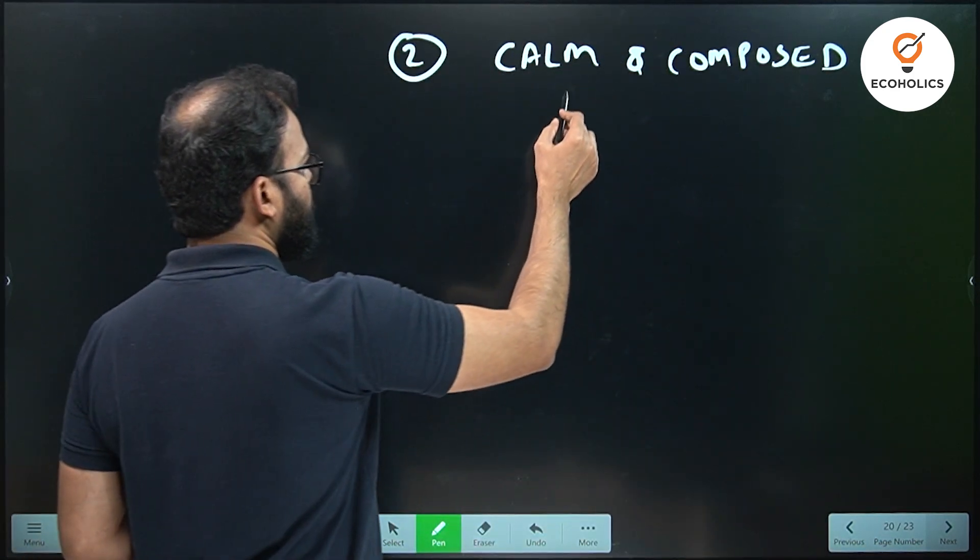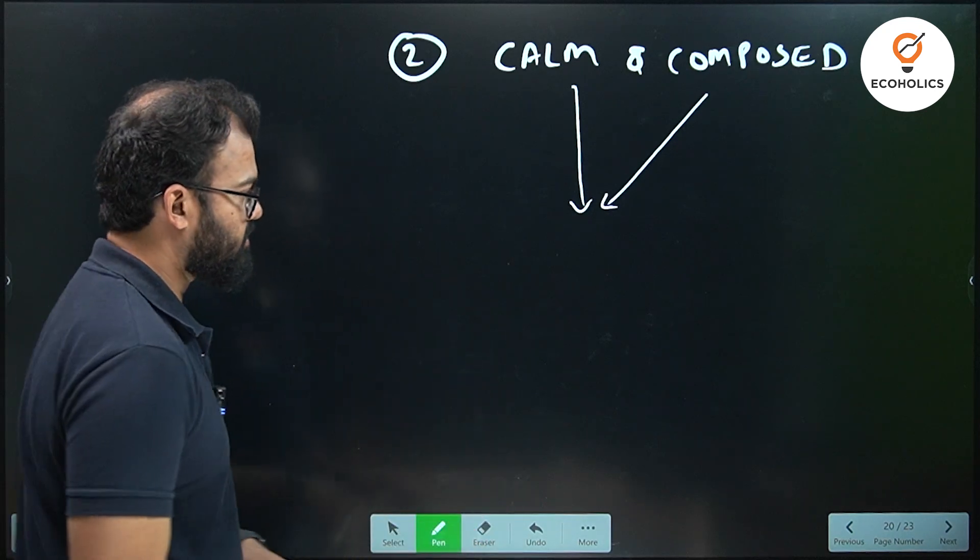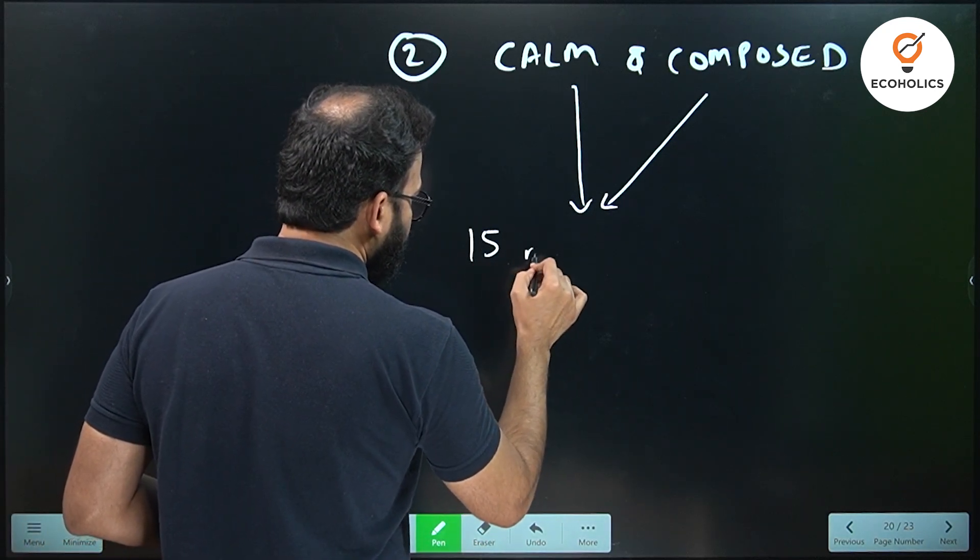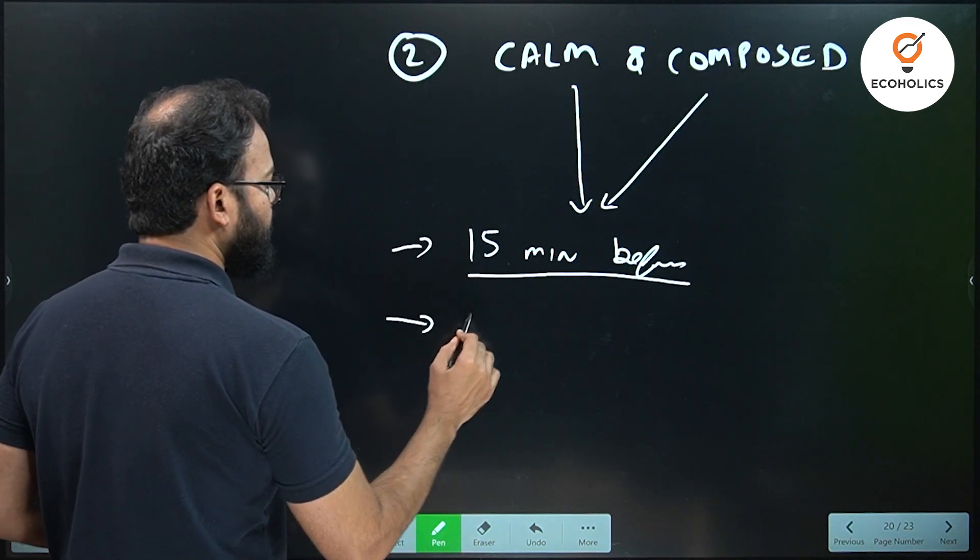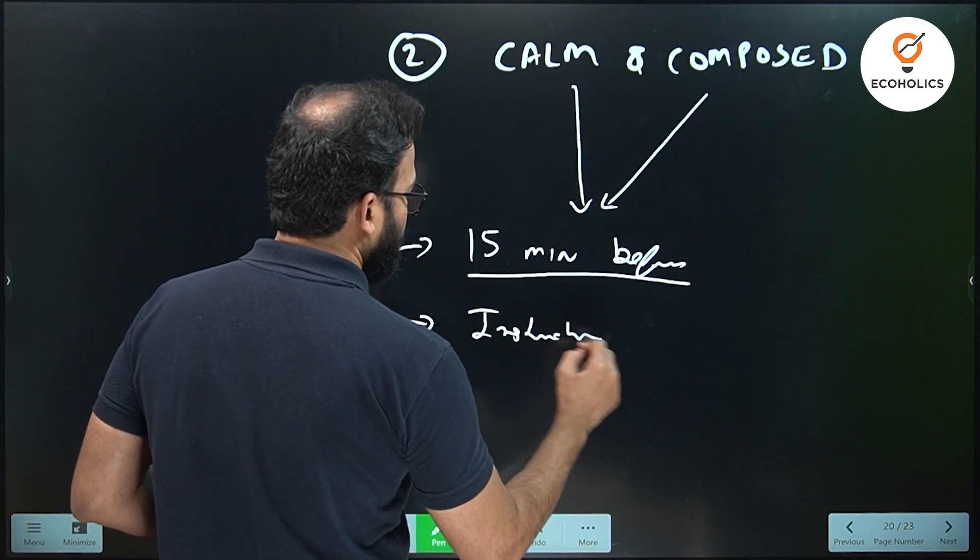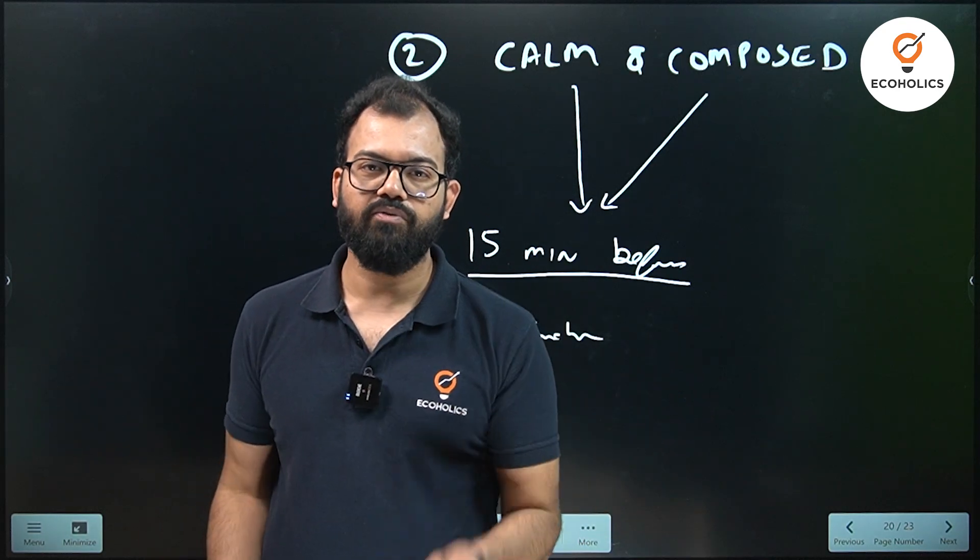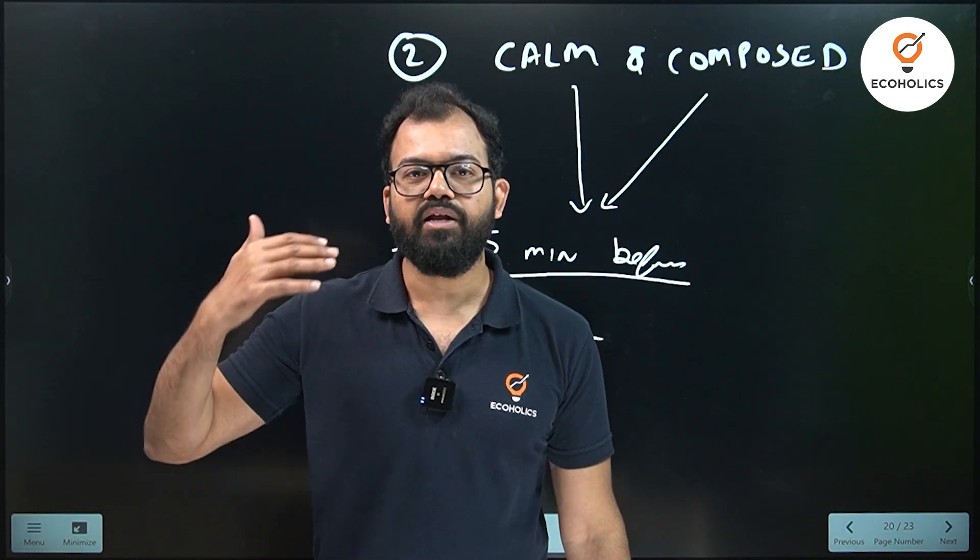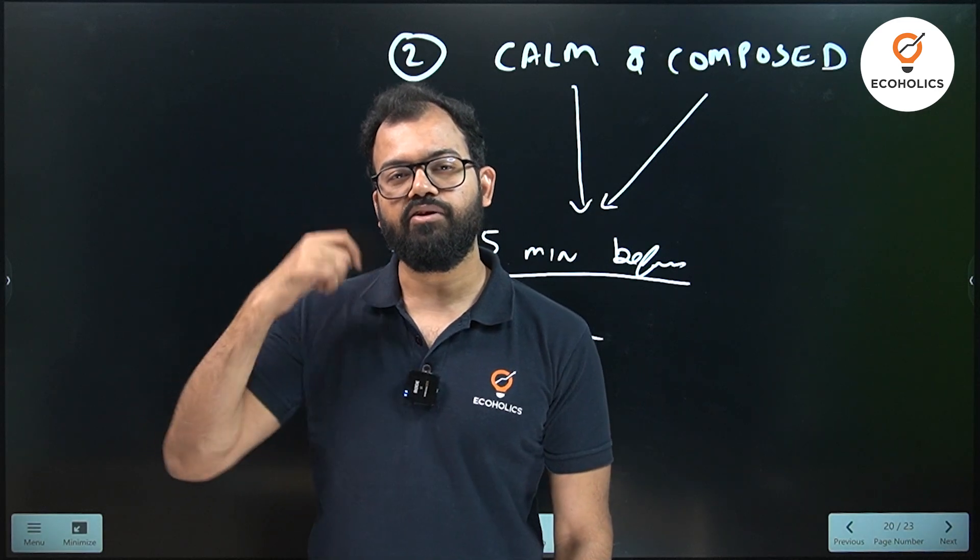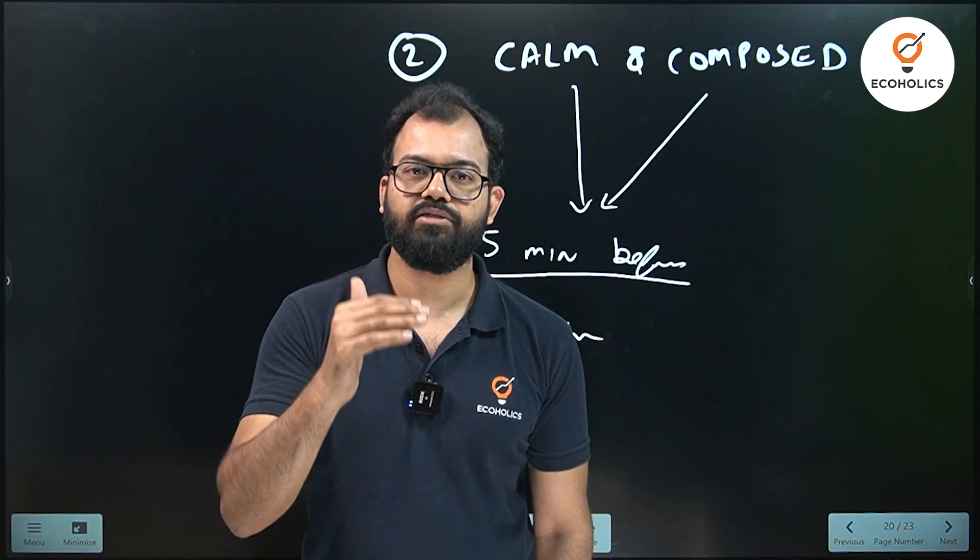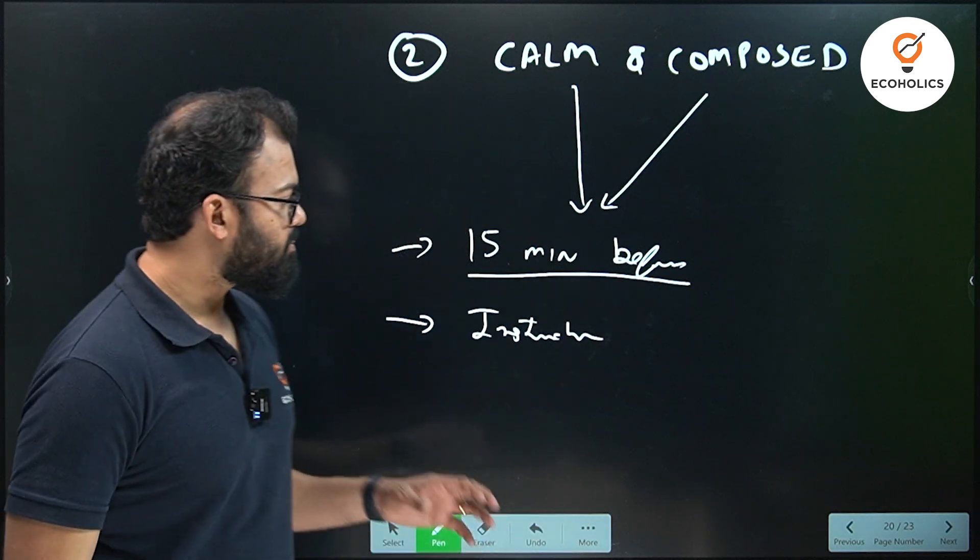Next point: calm and composed. Both these things are very vital in the examination hall or before the examination. Always remember to sit on your seat 15 minutes before at least. Read the instructions carefully - instructions on the screen. Although you know the instructions, still read. Now you will ask, why read when you know the instruction? Because you come in a reading and comprehension mode. If you're reading something, you're getting there. Instead of reading the first question, it's better to read instructions and get into that flow of reading, comprehending and then answering.